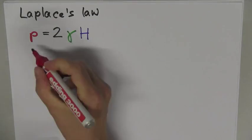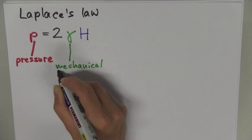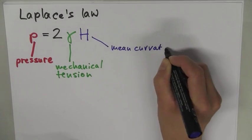If this simple physical picture is true, a physical law called Laplace's law describes the force balance at the cell boundary. It relates pressure in the cell, mechanical tension, and mean curvature of the cell boundary.